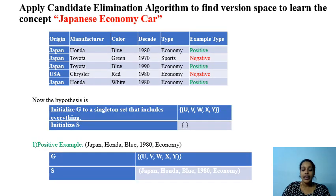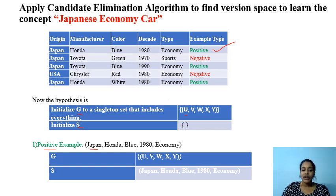On seeing the first positive example — Japan, Honda, Blue, 1980, Economic — let's check whether our G and S accept this positive example. Our G can accept any value for any attribute, so G accepts this training instance. Now we check with S. S rejects this positive example, so we have to make changes accordingly.